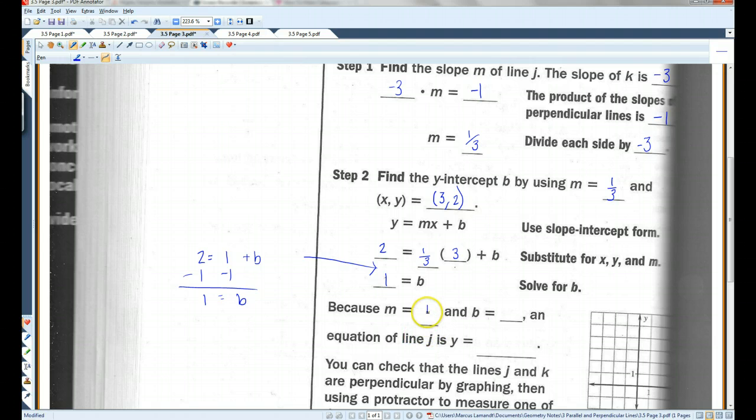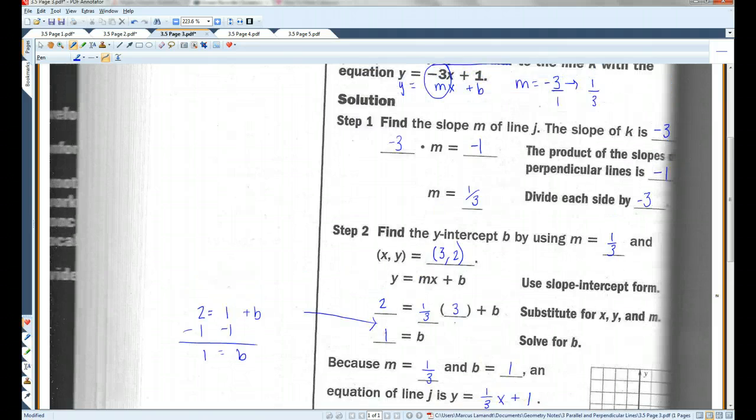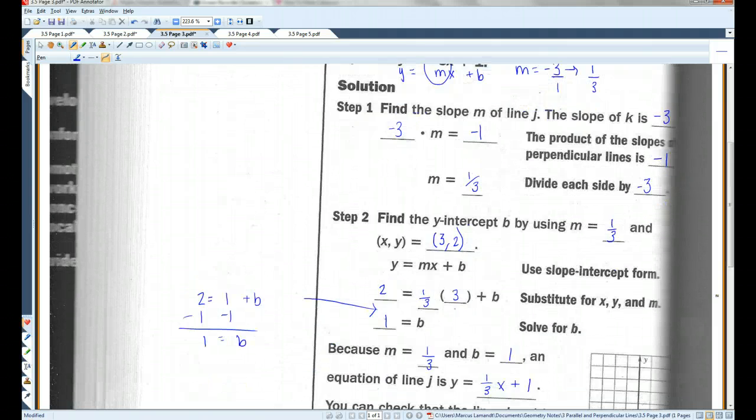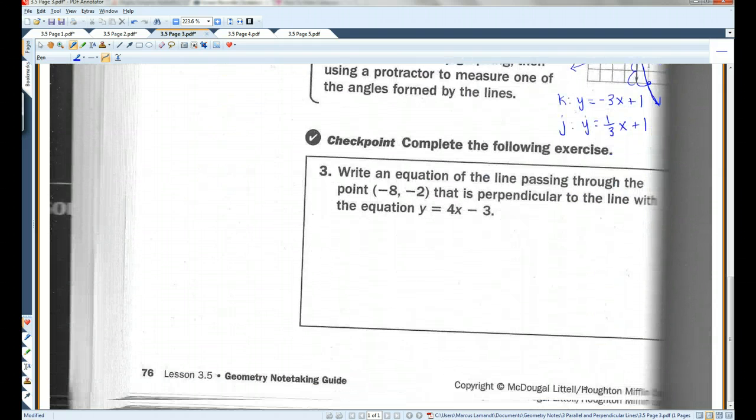Because m equals 1 third and b equals 1, an equation of the line j is y equals mx plus b. You can check the lines j and k are perpendicular by graphing these. So, the first equation was y equals negative 3x plus 1. Here's the y-intercept. Goes down 1, 2, 3, and over 1. I wish I could make straight lines on this thing. There we go. Kind of, sort of. This was line k. Line j was y equals 1 third x plus 1. So, same y-intercept, but I'm going to go up 1 over 3. And as you can see, these make a right angle. So, we did it right. Alright, you guys, go ahead and do this checkpoint. Let's go on to page 4.